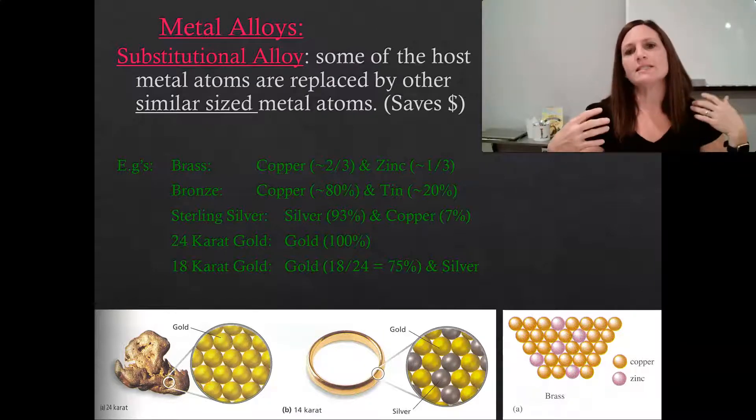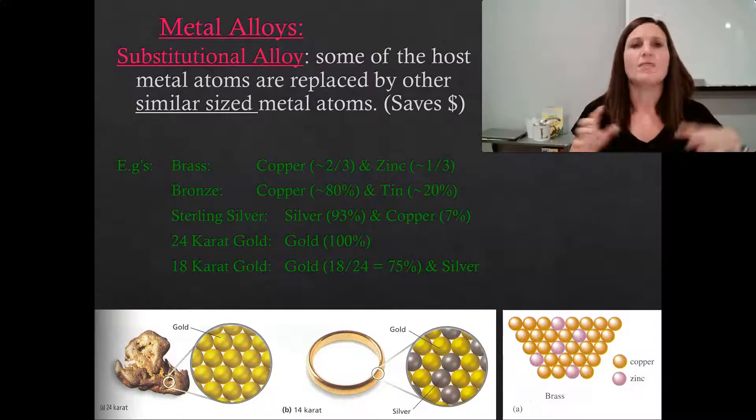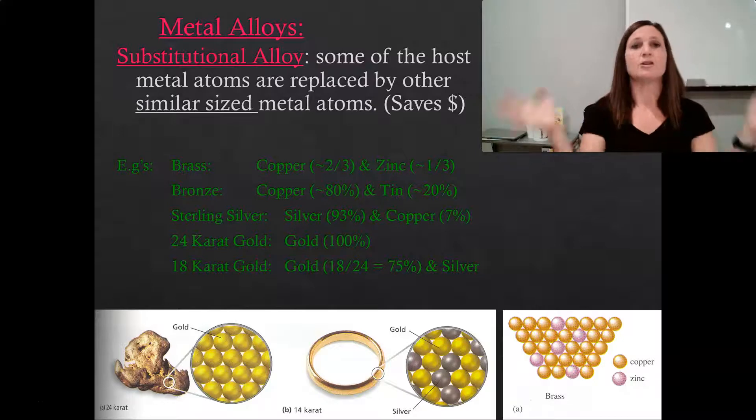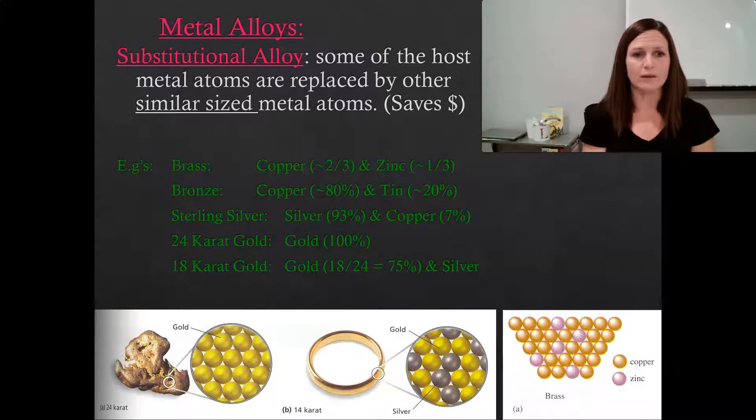So if you wanted to make something that had most of the properties of copper but cost less, then you would heat up the copper, heat up the zinc, mix them together, stir it up, let it cool. And now you have brass, like for a brass instrument. Bronze, like for an Olympic medal, is 20% tin and a mixture of copper.